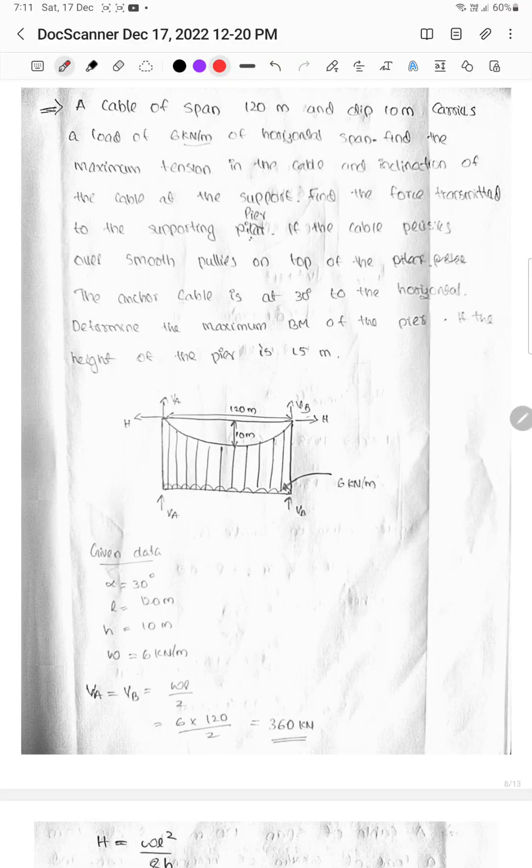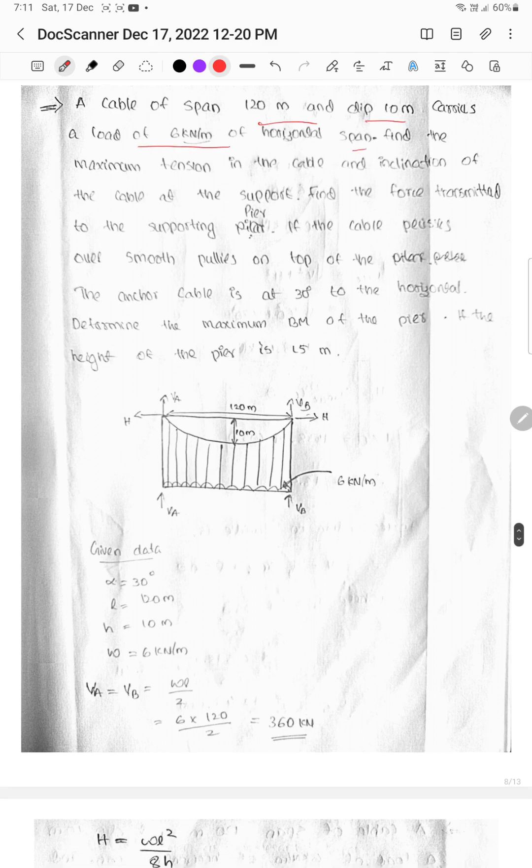A cable of span 120 meters and dip 10 meters carries a load of 6 kN per meter of horizontal span. Find the maximum tension in the cable and inclination of cable at the support.